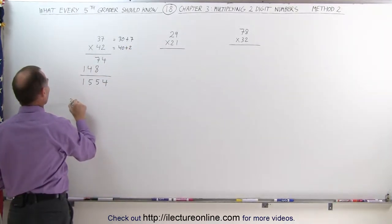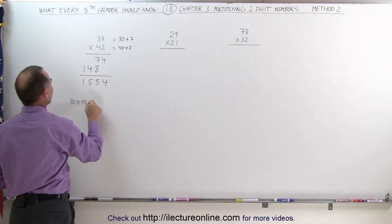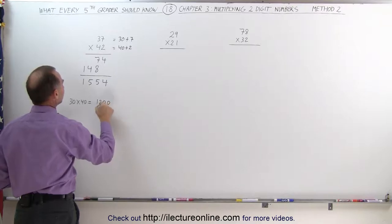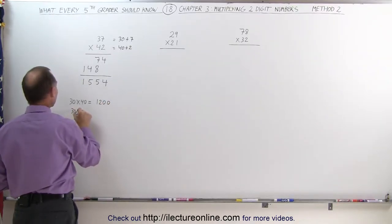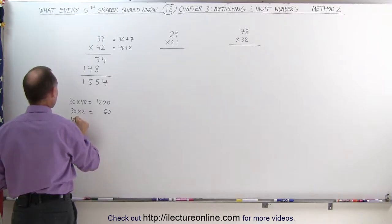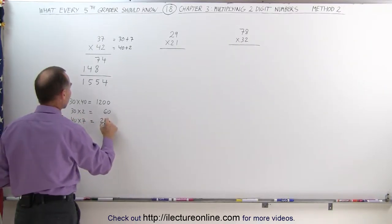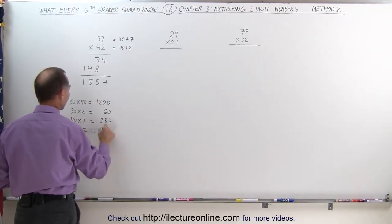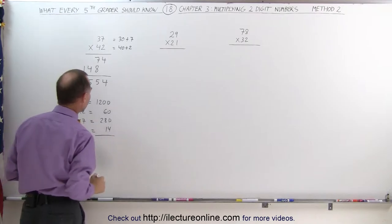In other words, 30 times 40 is equal to, well 3 times 4 is 12, add 2 zeros gives me 1200. 30 times 2 is equal to 60. 40 times 7, well 4 times 7 is 28, plus 0 is 280. And finally 7 times 2 is equal to 14, and then I add all that together.